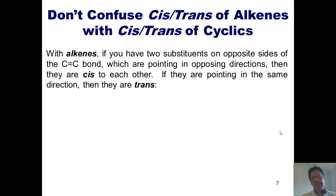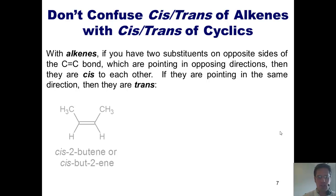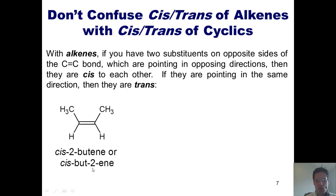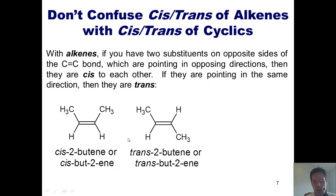In contrast with alkenes, if you have two substituents on opposite sides of the carbon-carbon double bond pointing in opposing directions, then they are cis to each other. If they're pointing in the same direction, then they're trans. So in this particular example, we would call this cis-2-butene because these two methyls are on the same side of the double bond as each other. You could also call it cis-but-2-ene. This other molecule would be called trans-2-butene or trans-but-2-ene — either is acceptable because these two methyls are on opposing sides of the double bond.